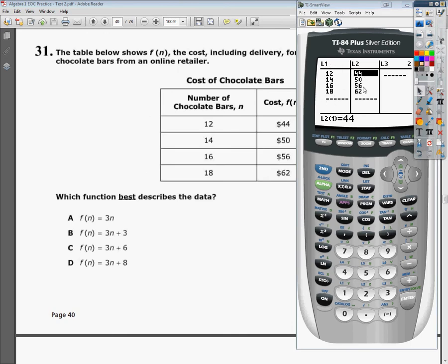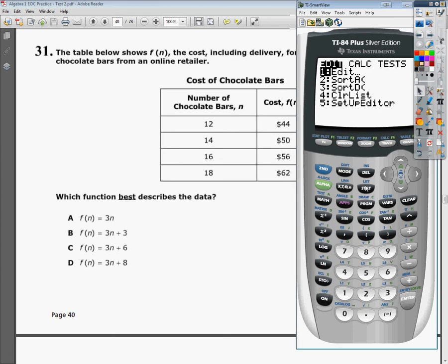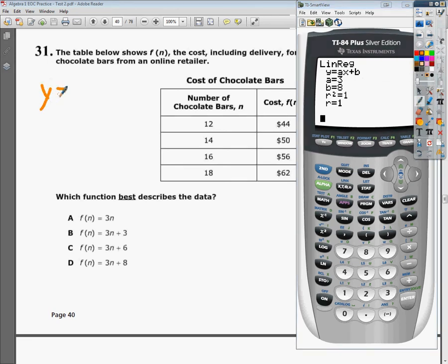I said originally that this problem was going to be linear, so what you can do is you can press stat, slide over to calculate, and slide down to number 4, which is linear regression, and then press enter. It gives you this equation, AX plus B, so we know that our formula is in the form Y equals AX plus B. That's slope-intercept form, pretty much, and it's the form for a line.